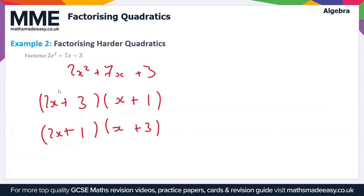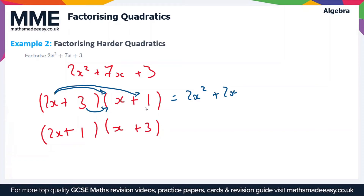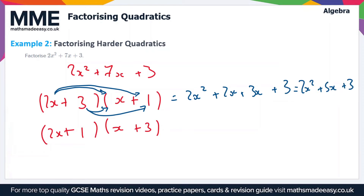Using the FOIL method on the first option: the first terms give 2x squared, the outside terms 2x and 1 give plus 2x, the inner terms 3 and x give plus 3x, and the last terms 3 times 1 give plus 3. Collecting like terms we get 2x squared plus 5x plus 3 — that's not good enough because we need 2x squared plus 7x plus 3, so that's a wrong answer.